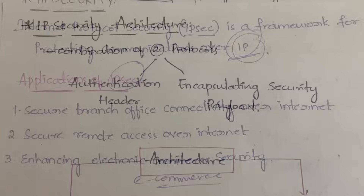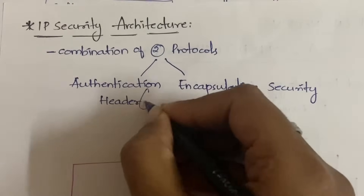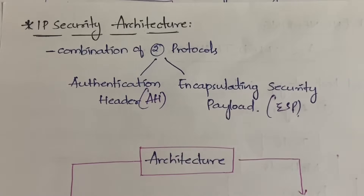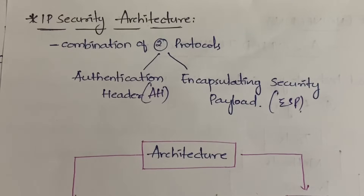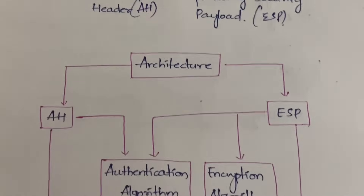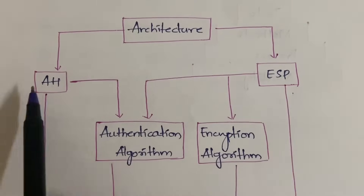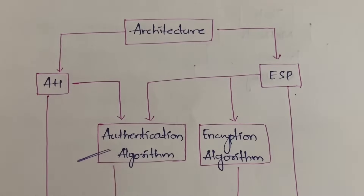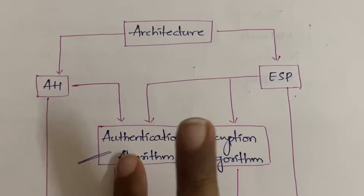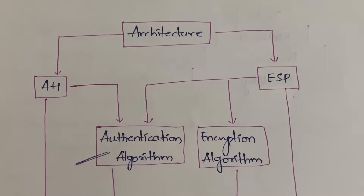Now let us see the architecture of IPsec. It is a combination of two protocols. The first one is Authentication Header, also called AH, and the second one is Encapsulating Security Payload, ESP. Authentication Header is responsible for authentication only, whereas by using Encapsulating Security Payload you can get both authentication and encryption.